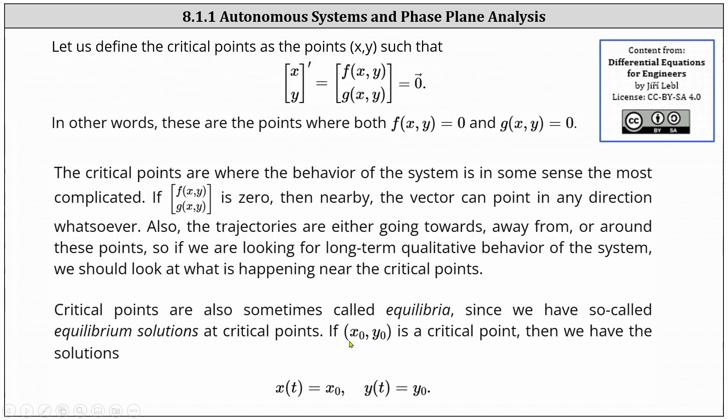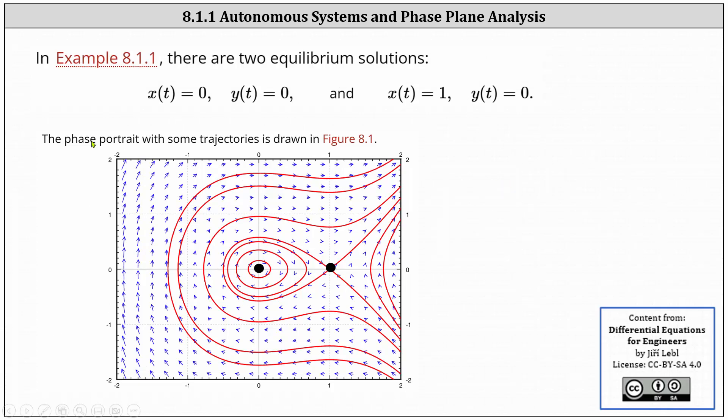Critical points are also sometimes called equilibria, since we have so-called equilibrium solutions at critical points. If (x₀, y₀) is a critical point, then we have the solutions x(t) = x₀ and y(t) = y₀. Going back to the previous problem, again analyzing the phase portrait, we have two equilibrium solutions: x(t) = 0, y(t) = 0 given by the point (0,0), and x(t) = 1, y(t) = 0 given by the point (1,0).